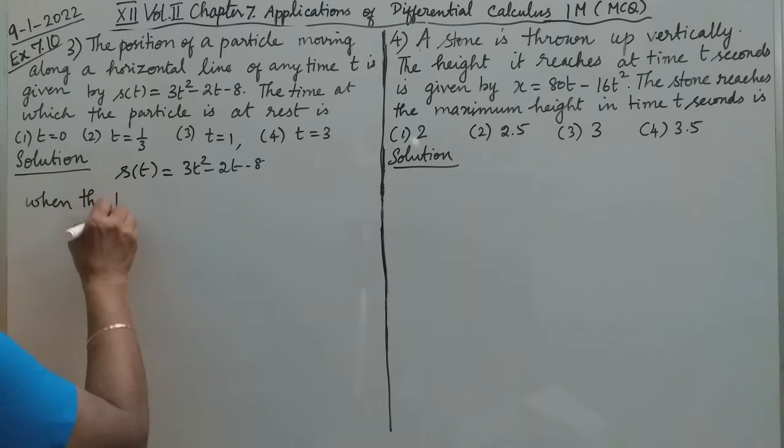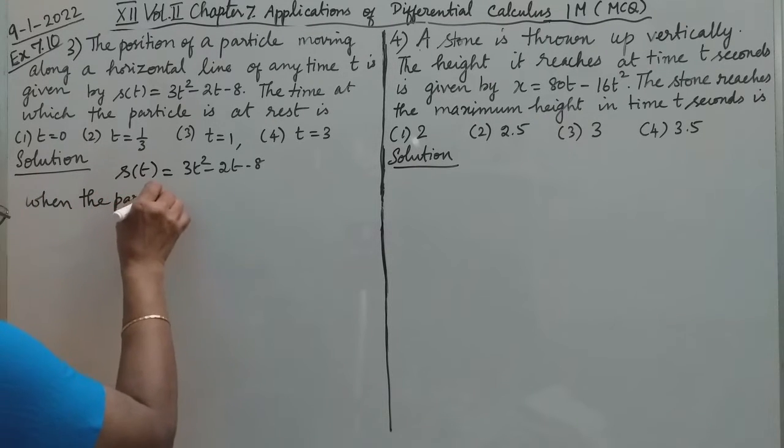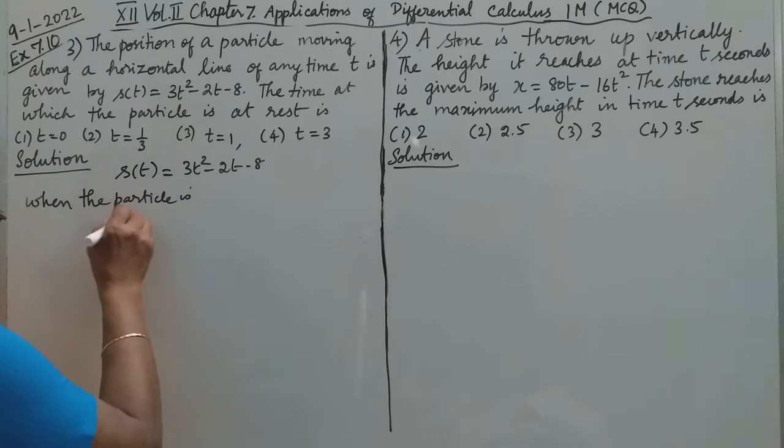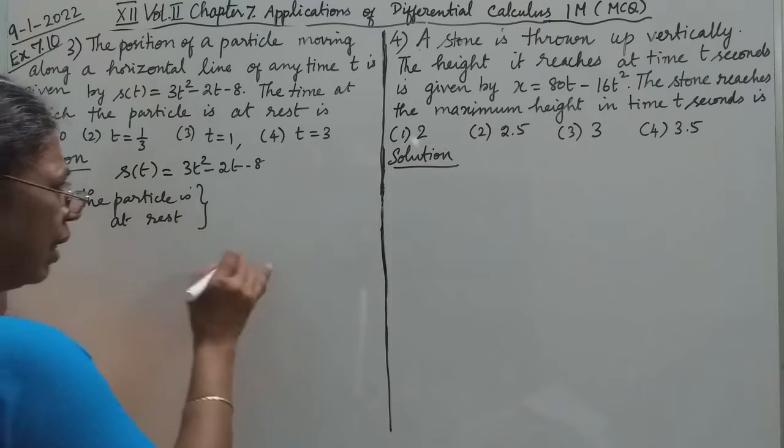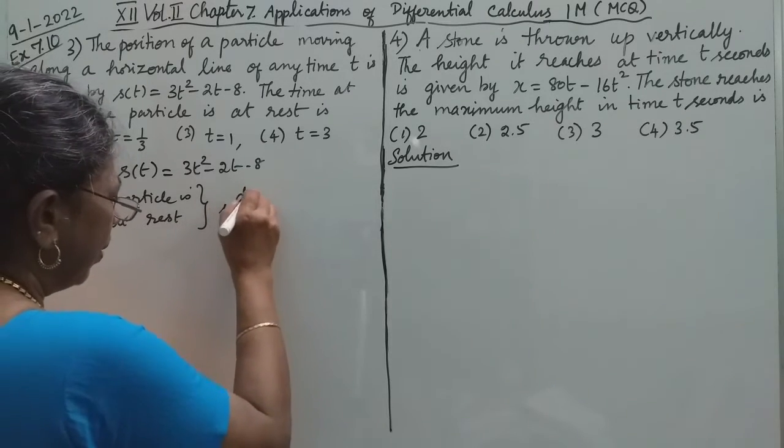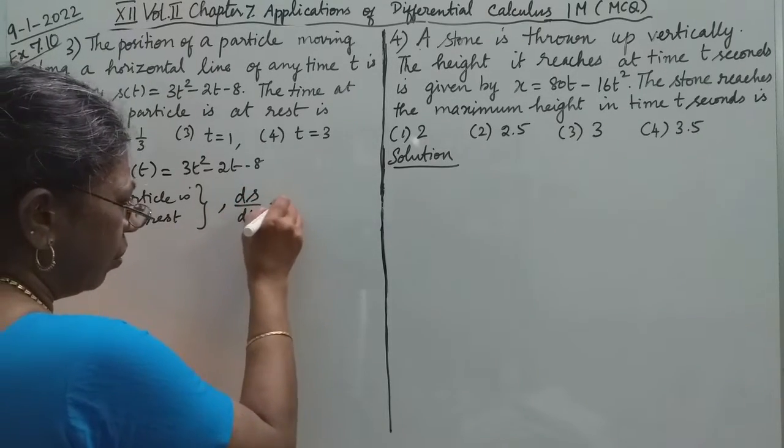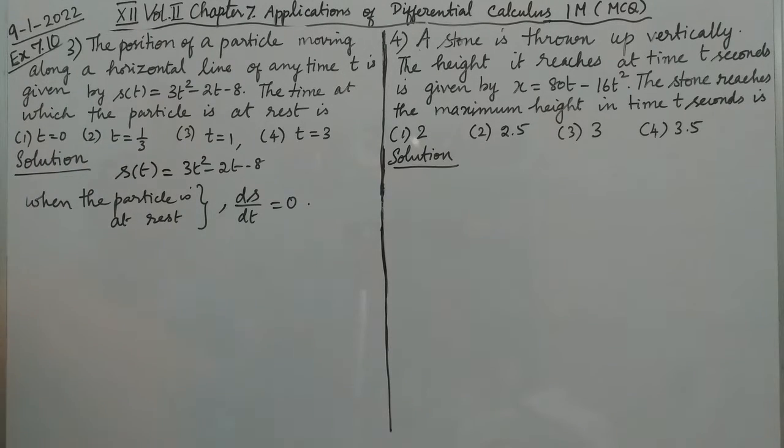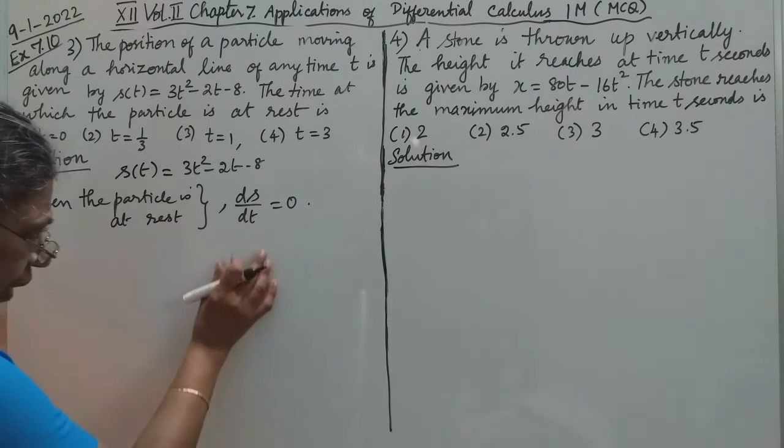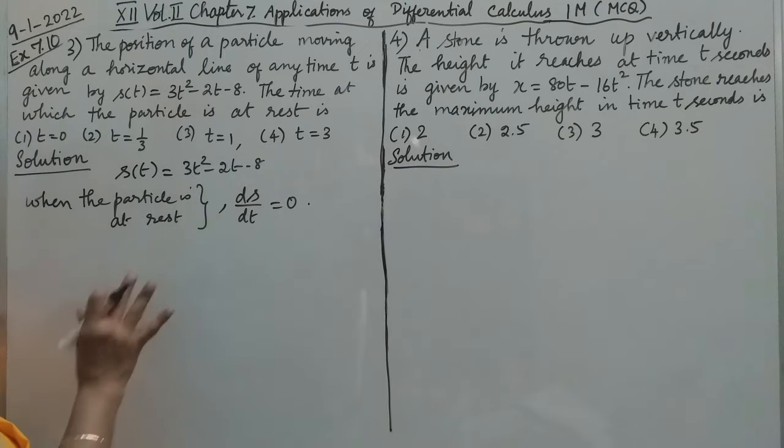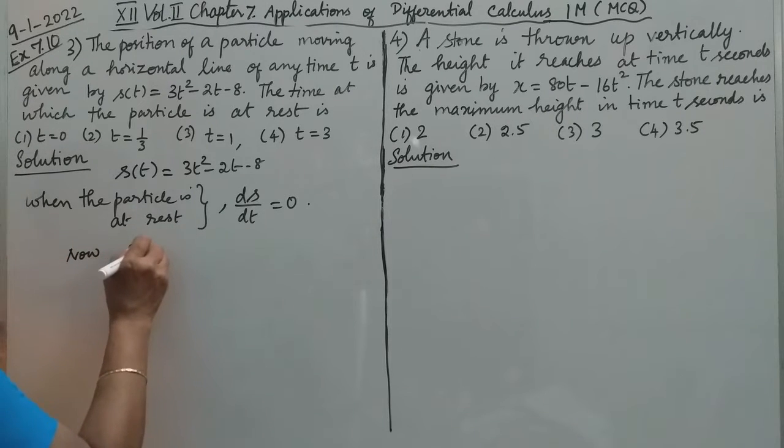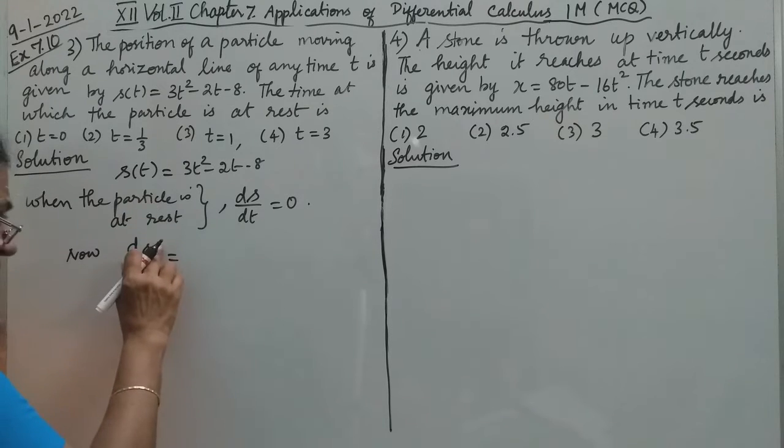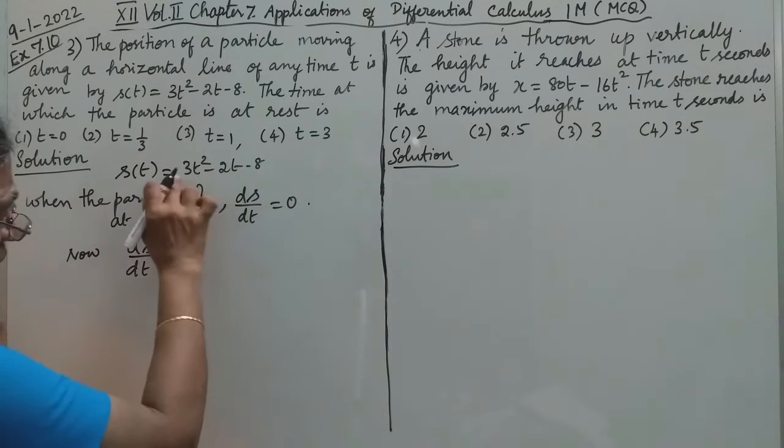So when the particle is at rest, we find ds/dt, which is the rate of change of s with respect to time t.